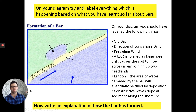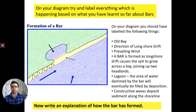This leaves a sheltered area behind — the old bay. Longshore drift comes along, and the prevailing wind brings material down the beach. The bar forms as longshore drift causes the spit to grow across the bay, joining the two headlands and forming a lagoon behind it. This lagoon is dammed by the bar so no water can get in, and eventually it will be filled in by deposition from constructive waves.